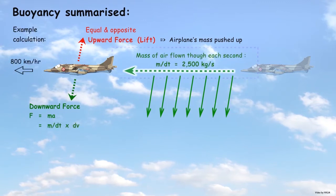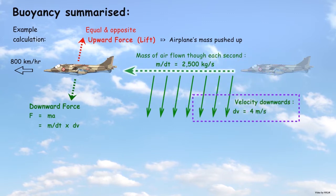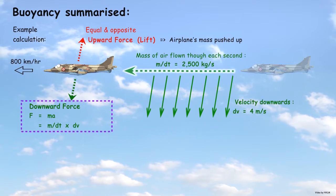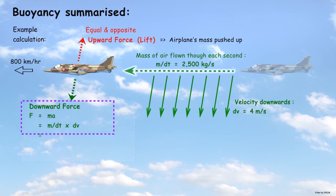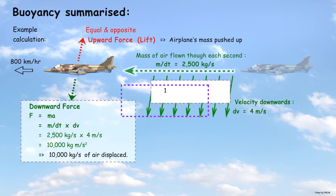In this example, a Harrier flies through 2,500 kilograms of air each second and accelerates this air downwards at a velocity of 4 meters per second. This creates the downward force that can displace 10,000 kilograms of air downwards each second.